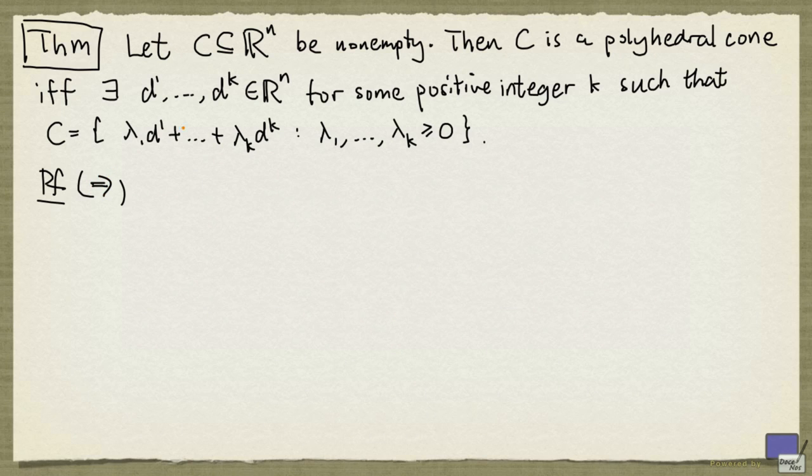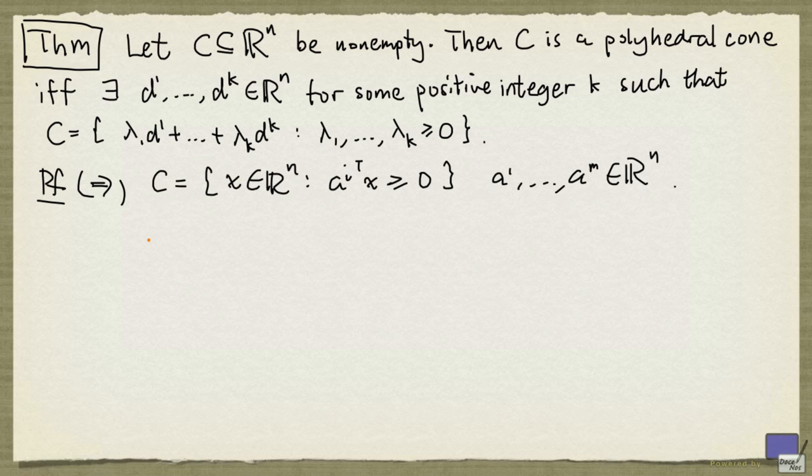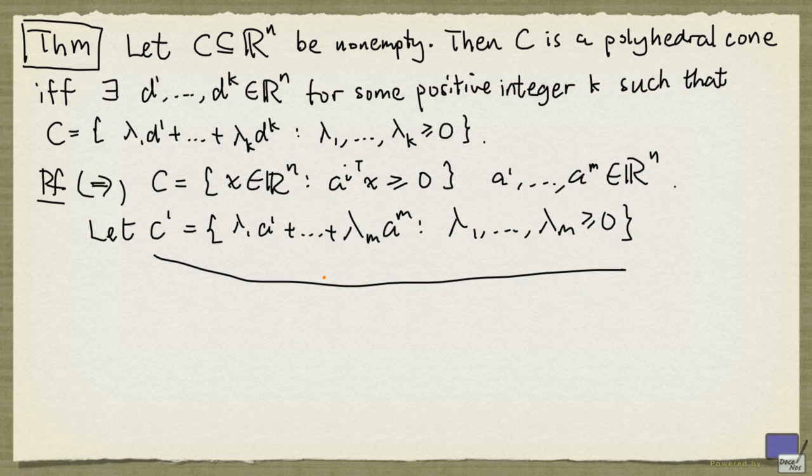We now prove the other direction. Suppose that C is a polyhedral cone given as follows. We are going to construct these d's. First, let C' denote the following set. By what we have just proved, C' is a polyhedral cone.